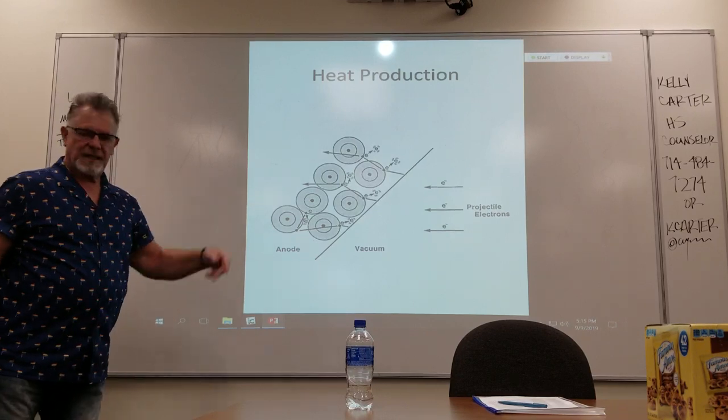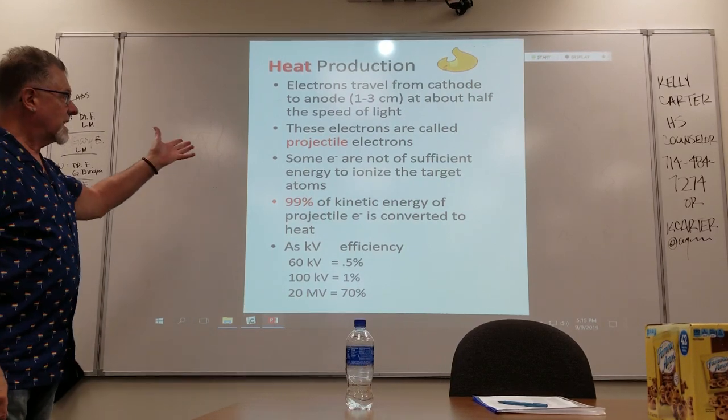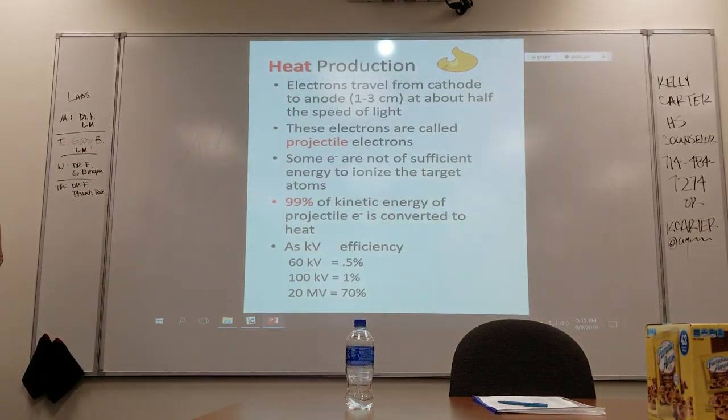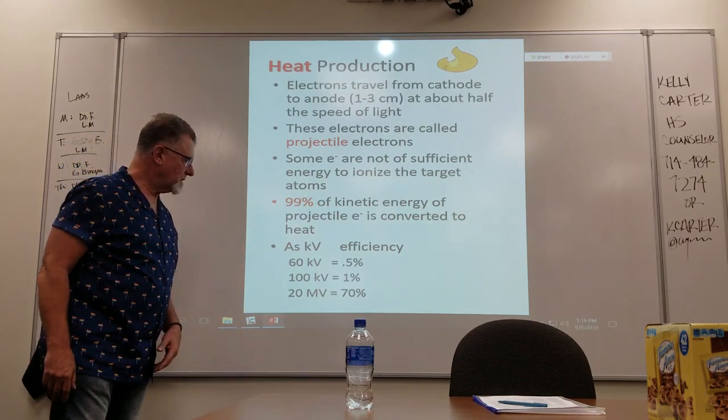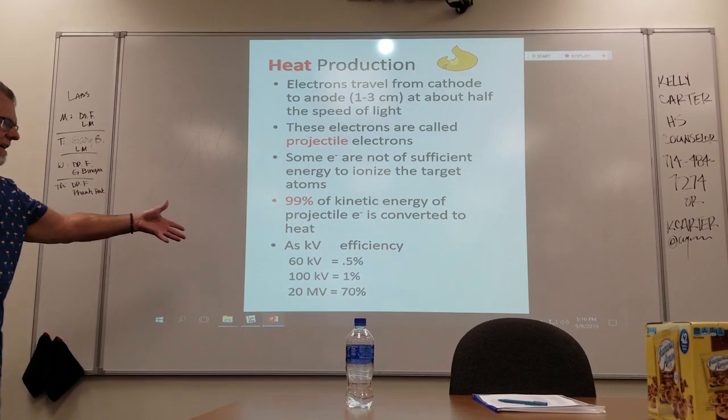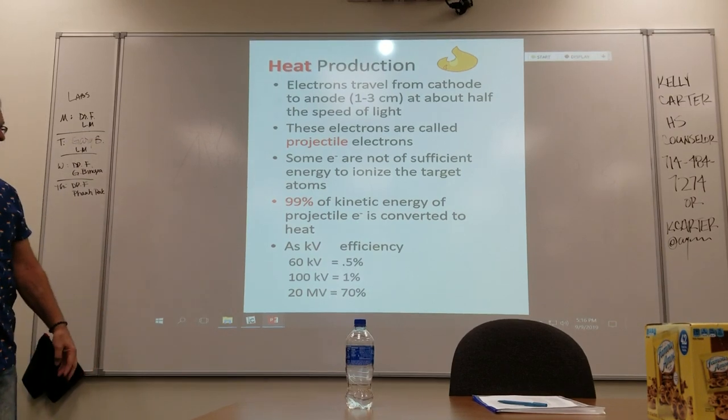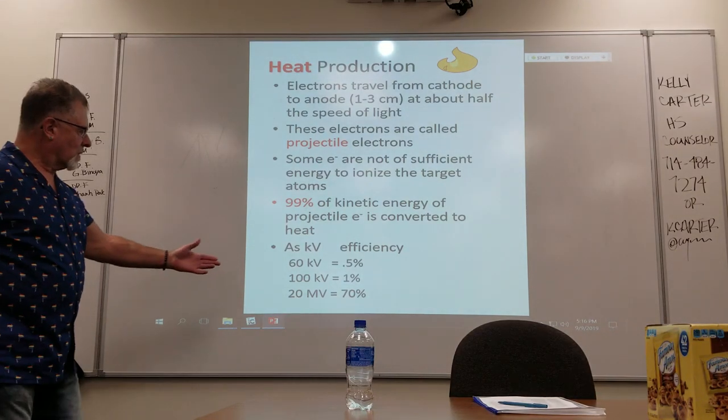You got electrons going from the cathode to the anode at about half the speed of light, called projectile electrons. Some are not of sufficient energy to ionize the target atoms, so 99% of kinetic energy of the projectile electrons is converted to heat. As far as the efficiency of producing voltage at 60 kV it's about a half a percent efficient, 100 kV is about one percent, 20 million volts like in therapy is about 70 percent efficiency. So where's the other 99% go? Heat.